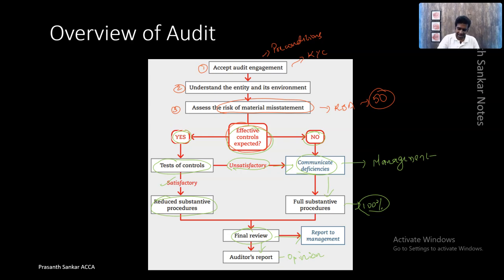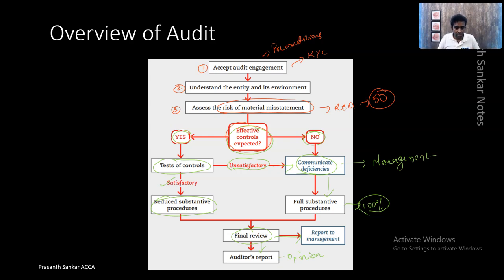This is the entire overview and it's very important that you clearly understand it before going to the next level. Pause the video and take a note of this overview — write it down and keep reading it. For example, in your scenario if the controls are not working fine and they say the controls are ineffective, as an auditor you are expected to mention in your answer: go for full substantive procedure. Understanding this process is the basic 101 for students of AAA — this is where your Advanced Audit and Assurance journey starts.